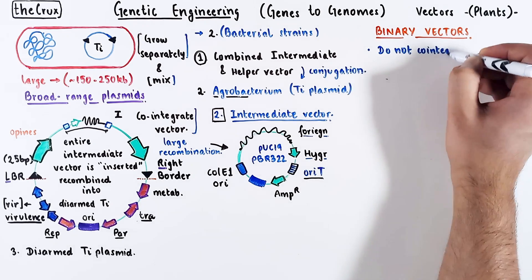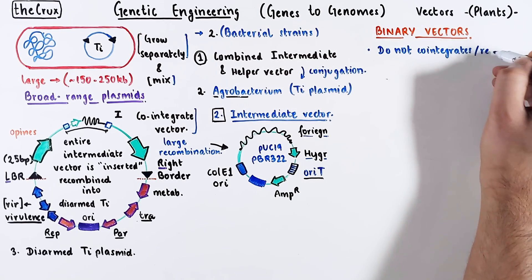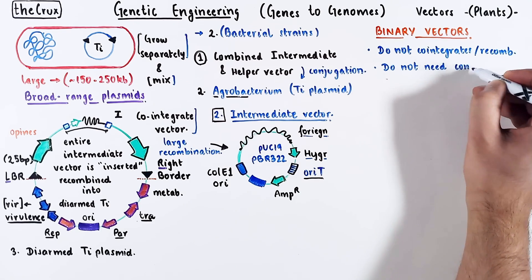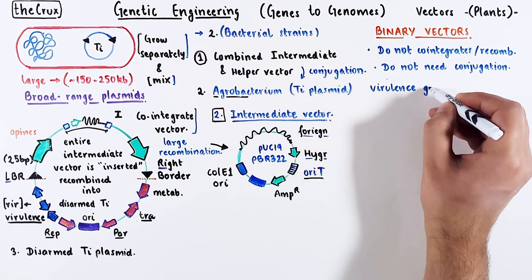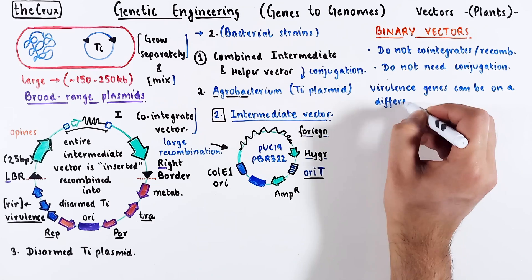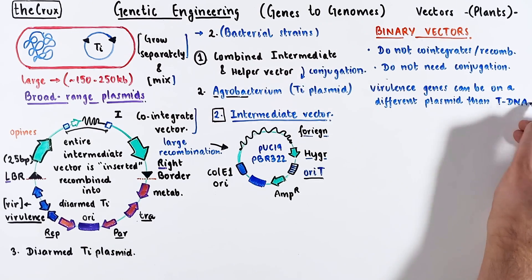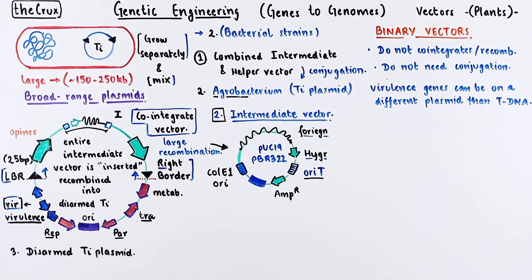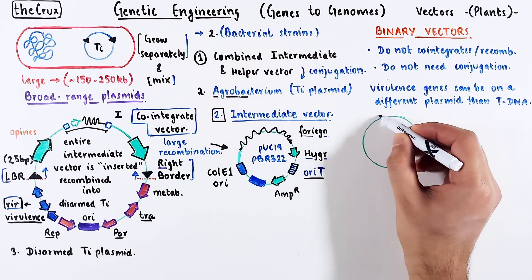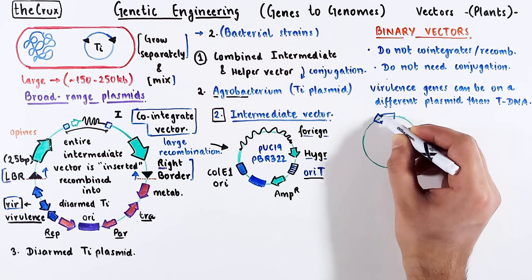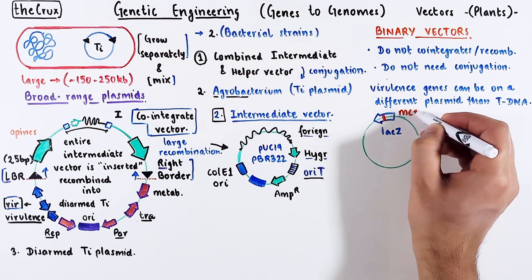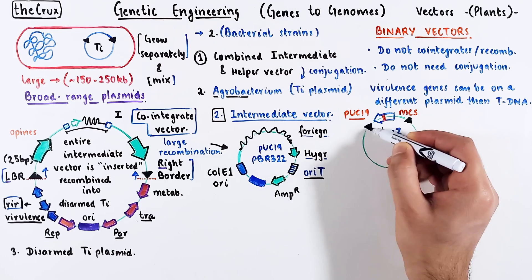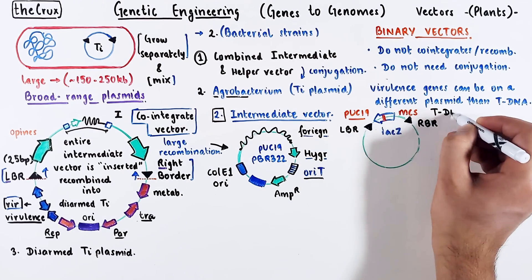You do not need to recombine and make a large co-integrate, and therefore you don't even need conjugation. Binary vectors rest on a simple idea: the virulence genes can be on a different plasmid than the T-DNA. In the co-integrate, the virulence genes and the T-DNA are in the same vector. Here is a simple binary vector — let's assume it is pUC19 based. It has the lacZ with the MCS, and it is flanked by the left and right border regions, so this portion of the vector can work like a T-DNA.